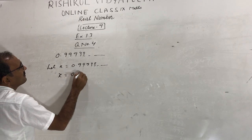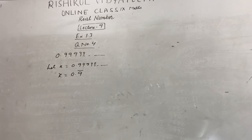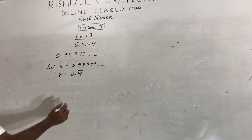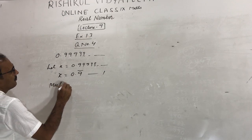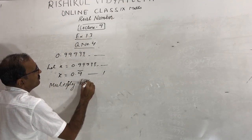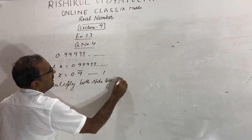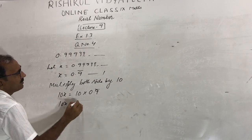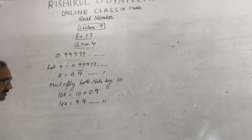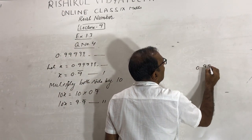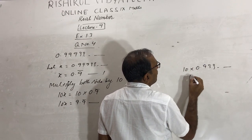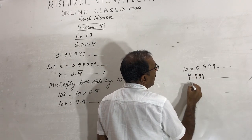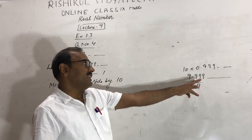Multiply both sides by 10. So 10x equals 10 times 0.9 bar, which gives 10x equals 9.9 bar. When you multiply 0.999... by 10, you get 9.999..., which you can write as 9.9 bar since 9 is repeating. This is equation number 2. Now subtract equation 1 from equation 2: 10x equals 9.9 bar minus x equals 0.9 bar, so 9x equals 9.